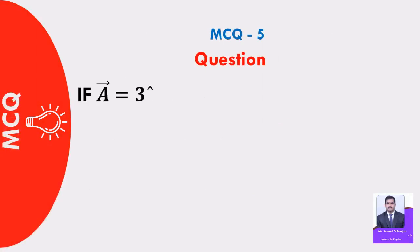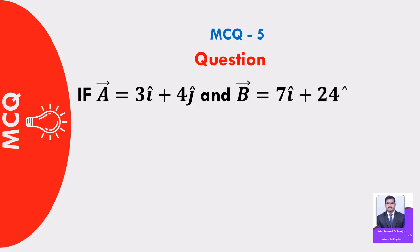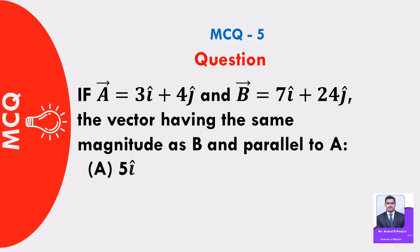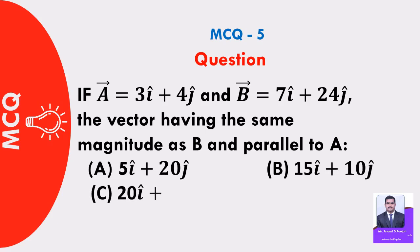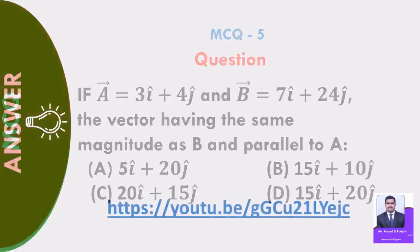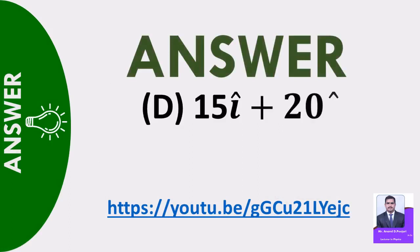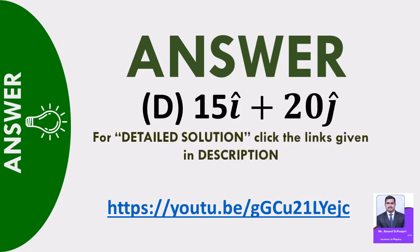MCQ 5: If vector A is equal to 3i cap plus 4j cap and vector B is equal to 7i cap plus 24j cap, the vector having the same magnitude as B and parallel to A: A) 5i cap plus 20j cap, B) 15i cap plus 10j cap, C) 20i cap plus 15j cap, D) 15i cap plus 20j cap. Answer: D — 15i cap plus 20j cap. For detailed solution, click the links given in description.